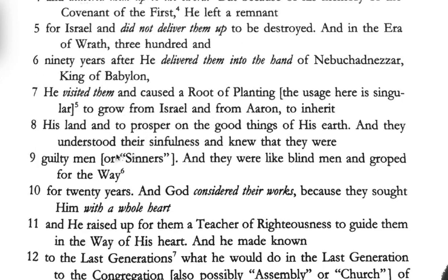There is a footnote here because in most translations this is made to be plural. This document speaks about a 'messiah of Israel and Aaron,' but in the Hebrew it is singular — yet in most translations they pluralize it and say 'the anointed ones.' Robert Eisenman points out that this is the Mashiach of Israel and Aaron — singular — so there is one messiah, but this messiah is a messiah of both Israel and Aaron.